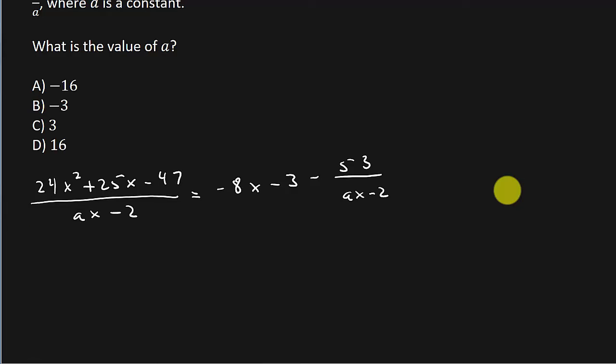So the first thing I'm going to do is multiply everything by ax minus 2. And you can see when I multiply it to this side over here it's just going to cancel it out. So we get 24x squared plus 25x minus 47 equals, and then I'm going to multiply this times each one of these terms.